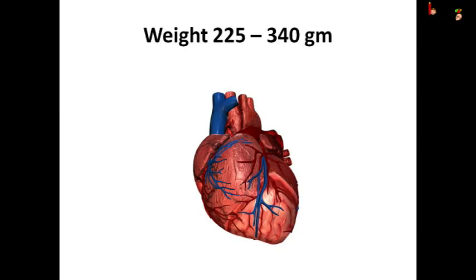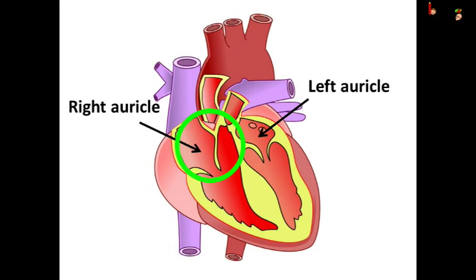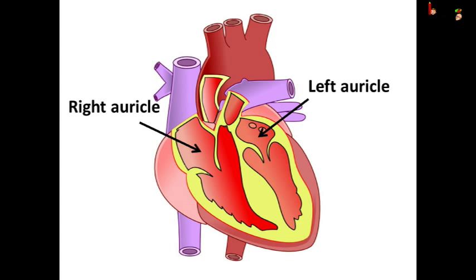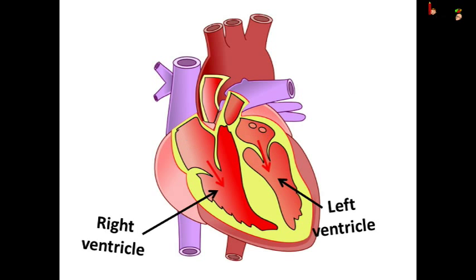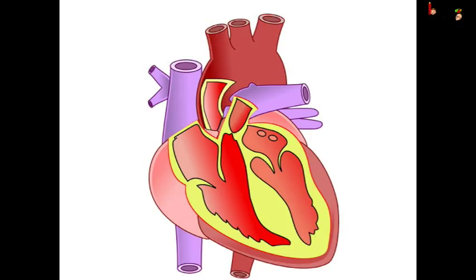Let us see the structure of the heart in detail. The heart is like a double story building — each story has two chambers. The upper two chambers are called the atria, or auricles in singular form. The two upper chambers are called the right auricle and the left auricle. On the ground floor, there are two chambers: the right ventricle and the left ventricle. The door between the auricle and ventricle is called the valve, and it opens toward the ventricle only. This means blood can flow from the right auricle to the right ventricle, and from the left auricle to the left ventricle, but cannot go back.